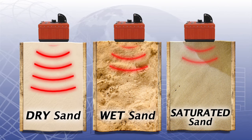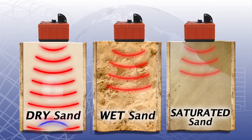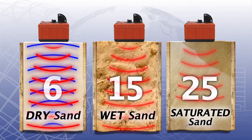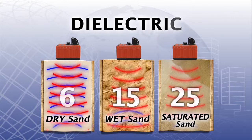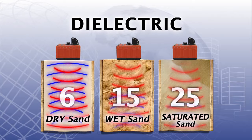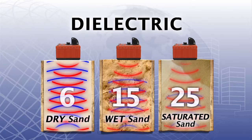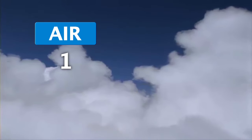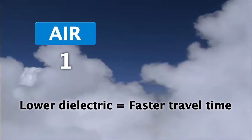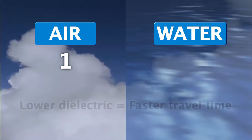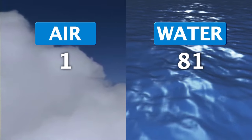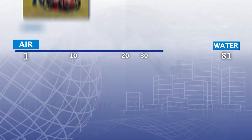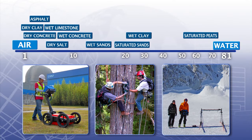Radar travels at different speeds through different mediums. A value is assigned to these mediums to represent different velocities of radar. This value is called dielectric. Dielectric is important so the depth of targets or layers can be accurately estimated. Air has a dielectric of 1, which means radar travels fastest through air. Water has a dielectric of 81, which means radar travels slowest in water. Every medium in the world falls somewhere in between.